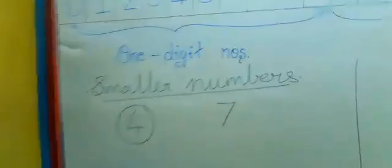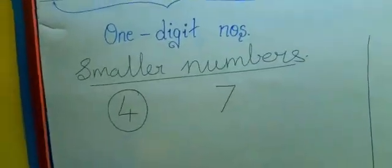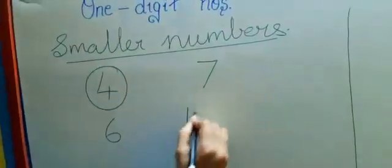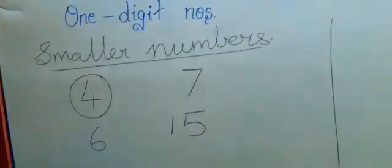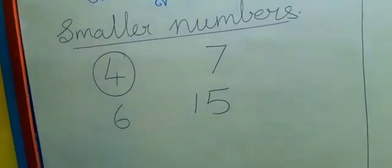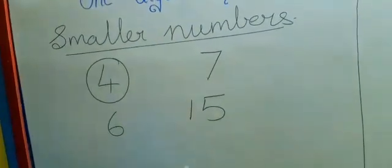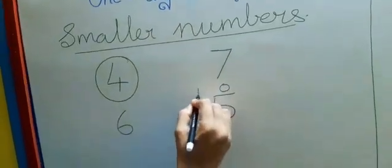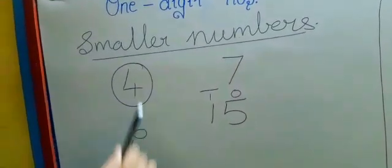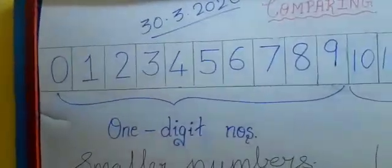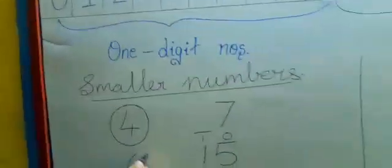Now we are going to compare one one-digit number and one two-digit number: 6 and 15. Which is the smaller number? 6 is the smaller number, because 6 is a one-digit number and 15 is a two-digit number — it has two places: 5 is in the one's place and 1 is in the ten's place. See on the number line: here is 6, here is 15. So 6 is closer to 0, and 6 is the smaller number.